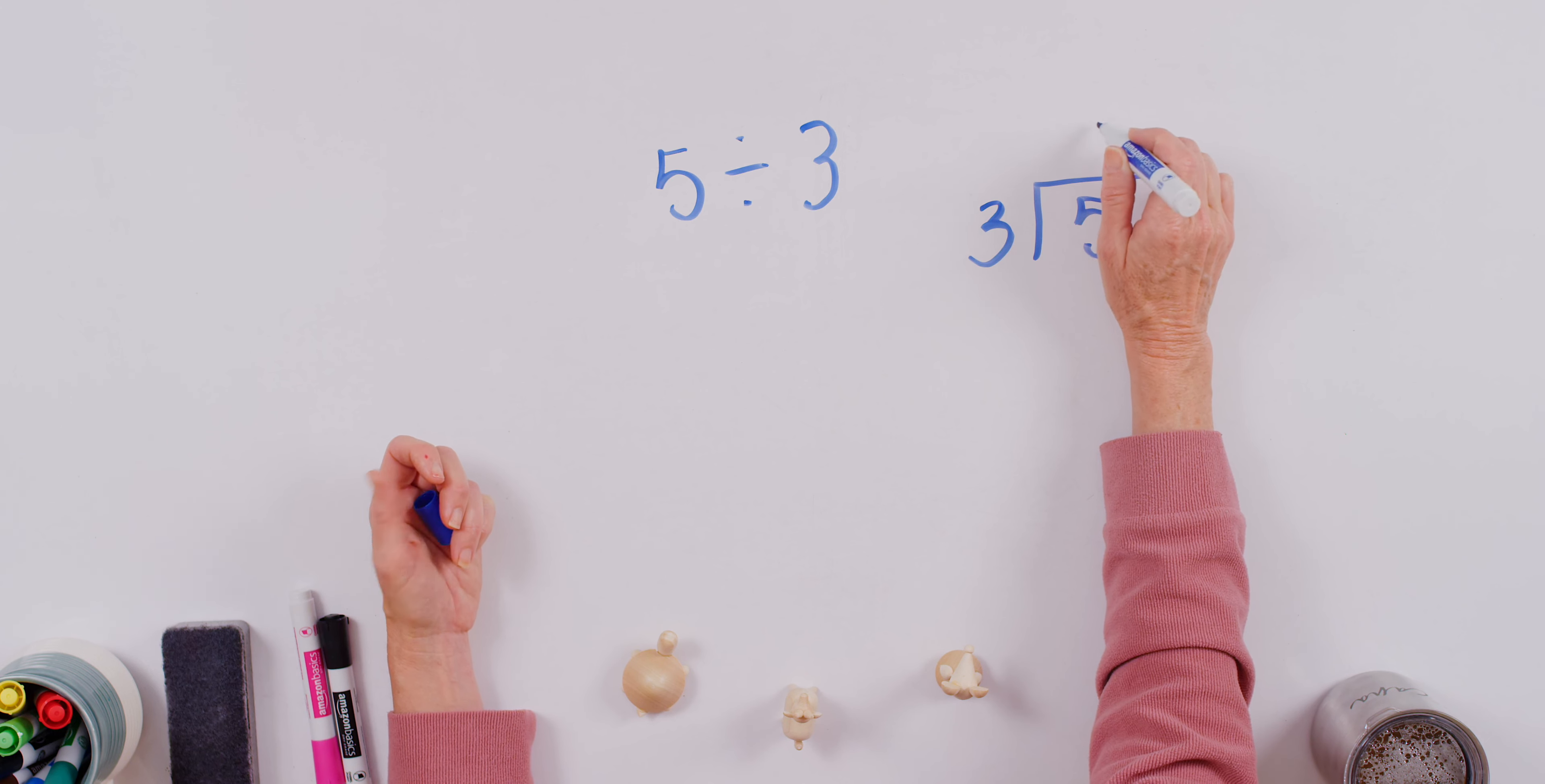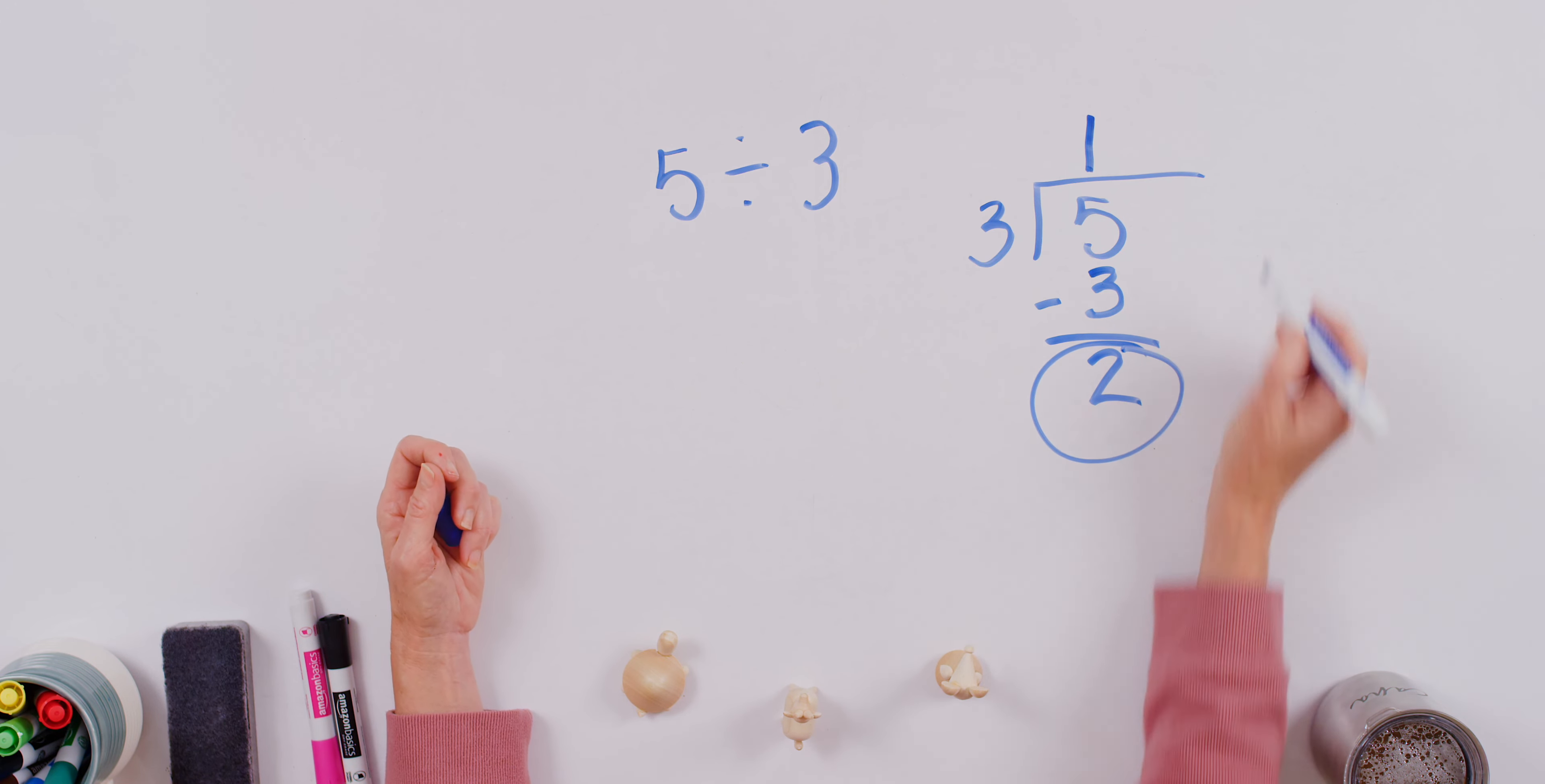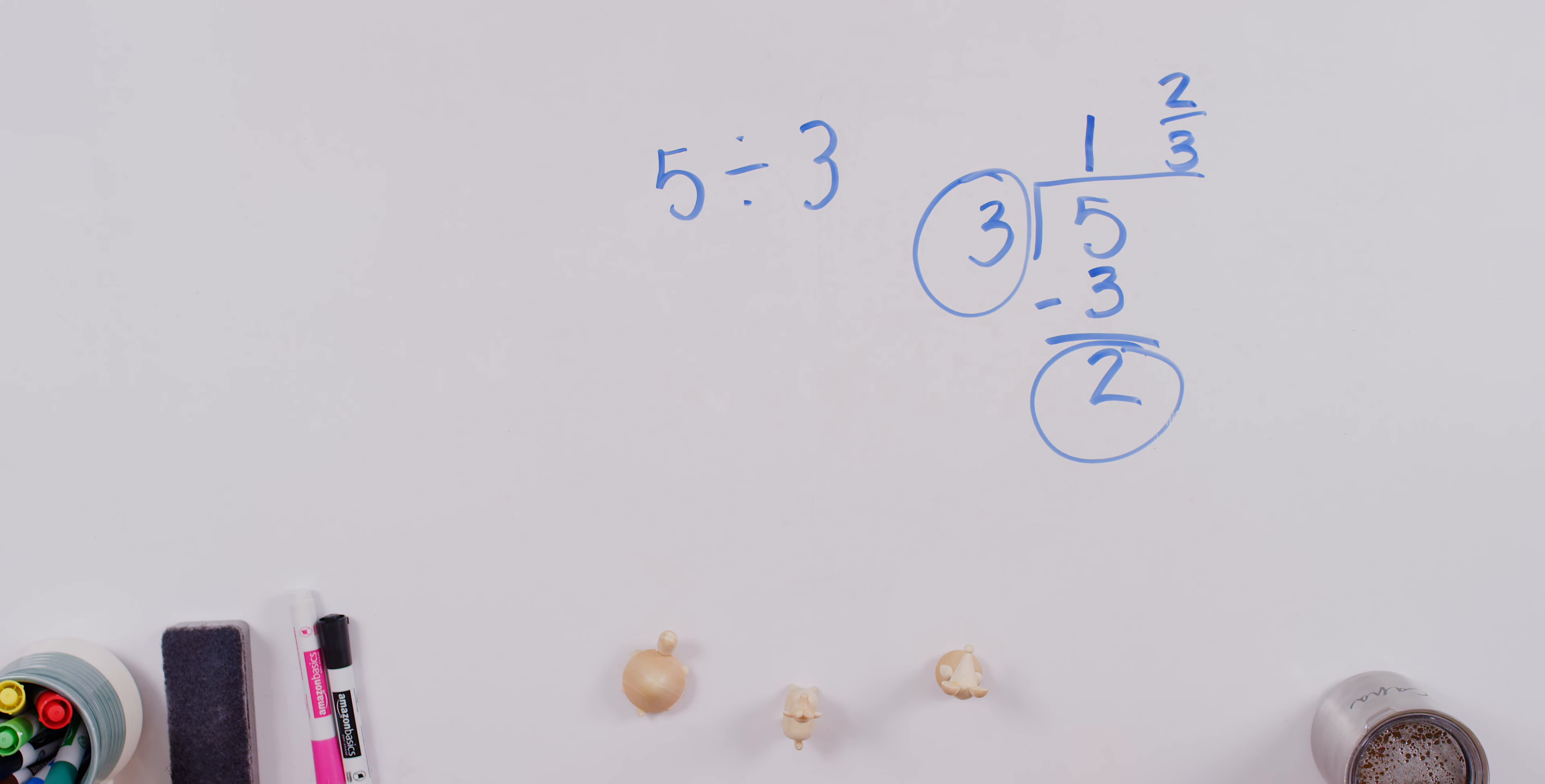So, and then we say one times three equals three. We subtract, and now watch what happens. This remainder becomes the numerator, and this number becomes the denominator. Okay, so we're going to look at another one, and we'll use this process here in a second.